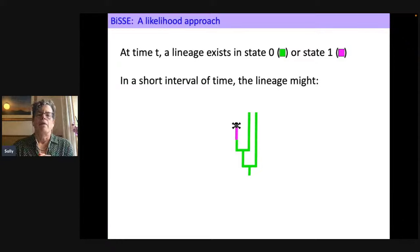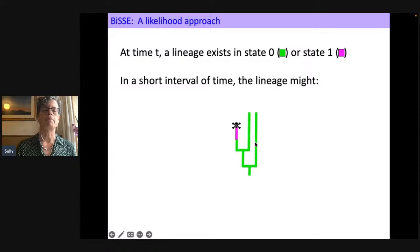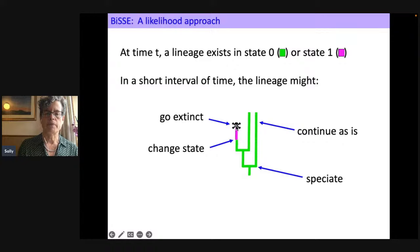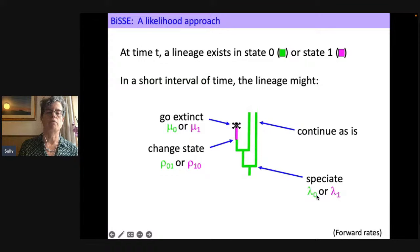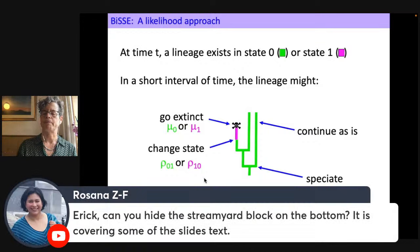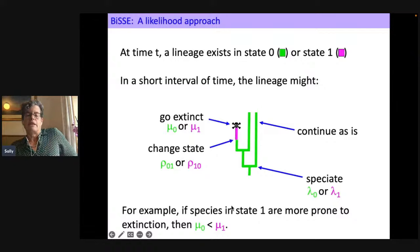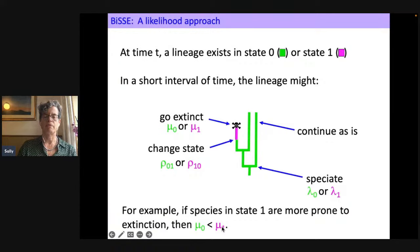Let's walk through the basic BiSSE approach. A lineage exists in one of two character states, 0 or 1 — purple or green. Over a short interval of time, that lineage could go extinct, change state, speciate, or continue as is. We assign parameters to the rates of all those possible transitions: extinction rates mu, changing states rho, and speciation rates lambda, each depending on the state the species is in. If species in state 1 are more prone to extinction, then mu-zero is less than mu-one.